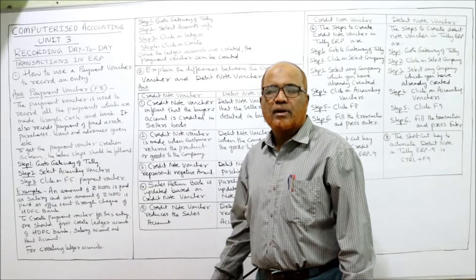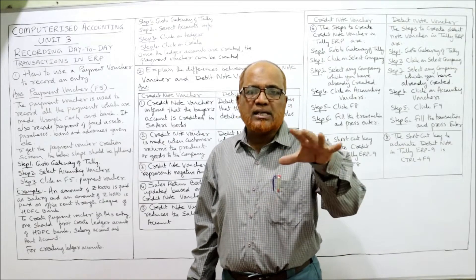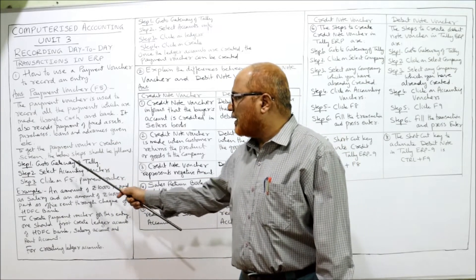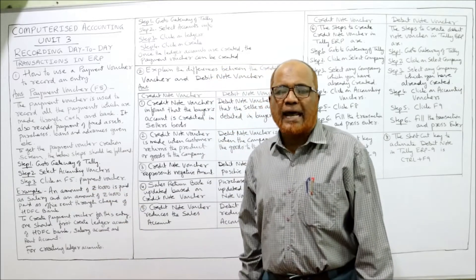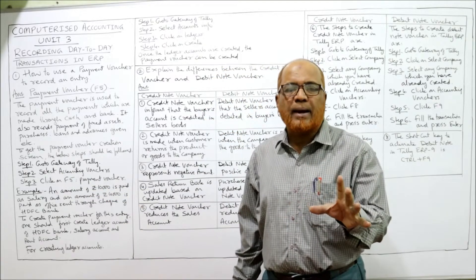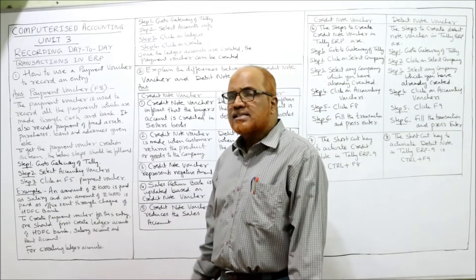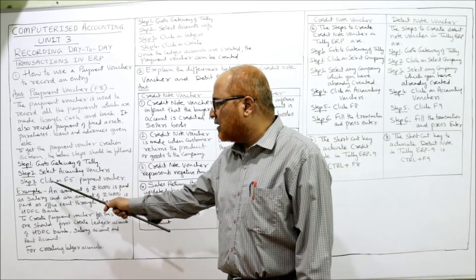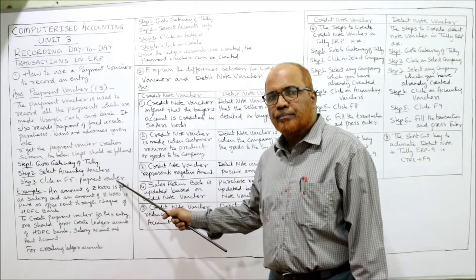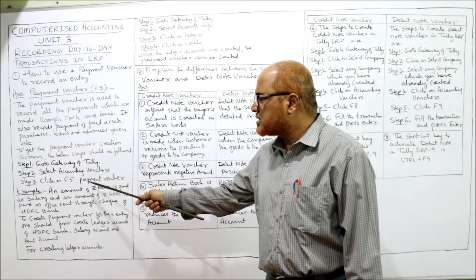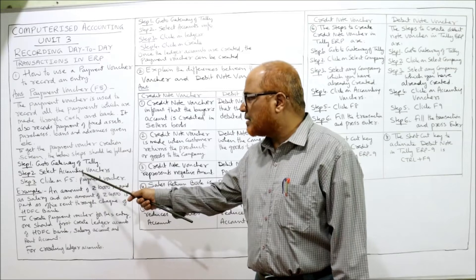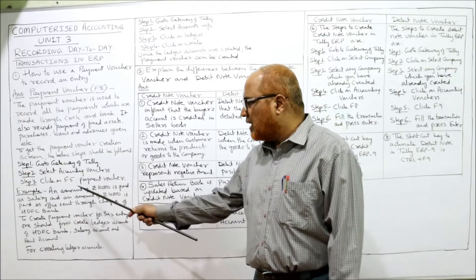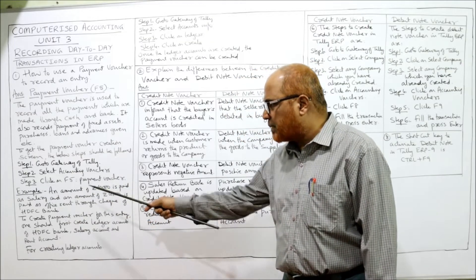To get the payment voucher creation screen, follow these three steps: Step one, go to the Gateway of Tally and open the tally package. Step two, select accounting vouchers. Step three, click F5 for the payment voucher. Only three steps are involved.